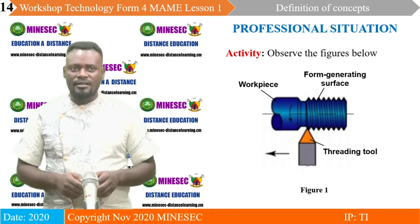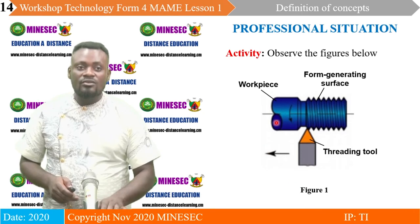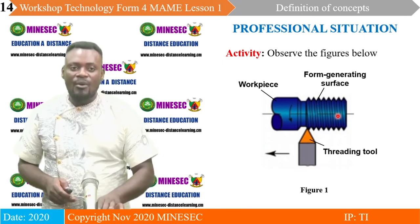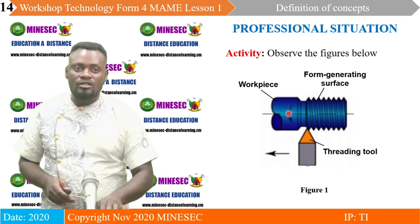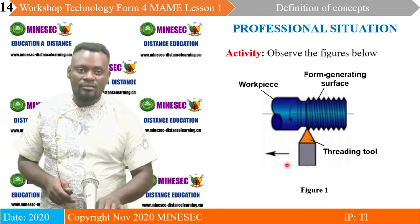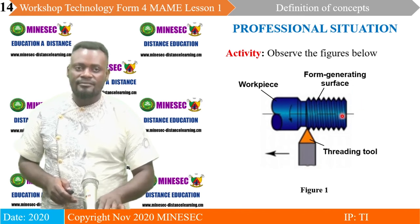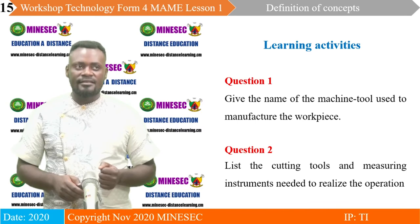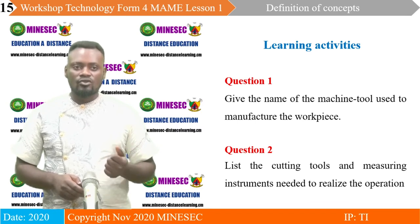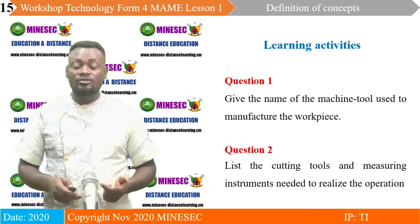This is our professional situation. We are supposed to observe the image on figure one, which shows a workpiece with helicoidal ridges. These were created with the help of a turning tool. The workpiece has an arrow showing the rotation of work, and the tool shows the translation of the feed. With this workpiece and the tool, we then have the form-generating surface — the surface we call threading. The learning activities ask: give the name of the machine tool used to manufacture the workpiece, and list the cutting tools and measuring instruments needed to realize the operations.